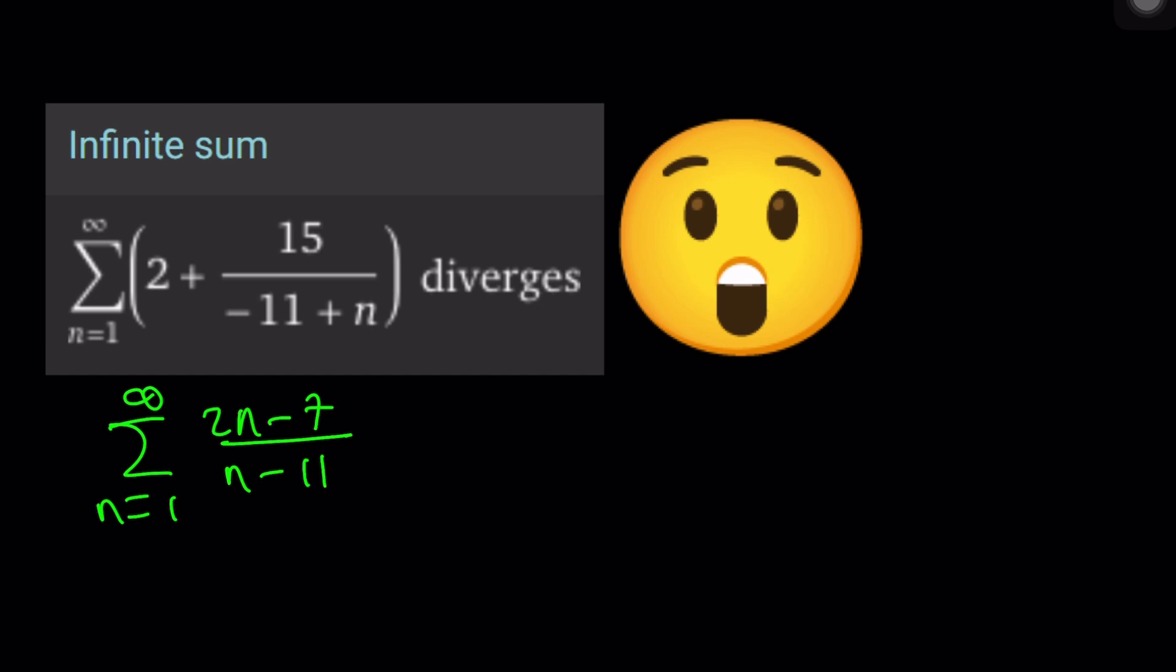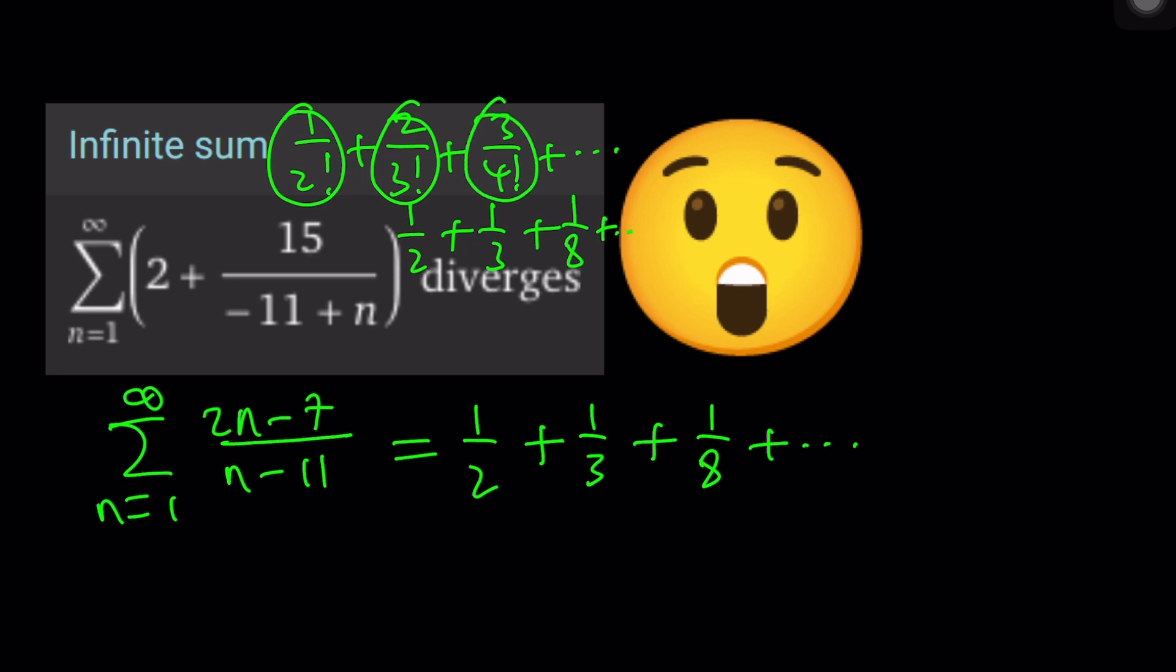Now, this might look very surprising and very different from what we found, but if you think about it, for n equals 1, we get negative 5 over negative 10, which is 1 half. For n equals 2, we get negative 3 over negative 9, which is 1 third. And then for n equals 3, we get negative 1 over negative 8, which is 1 over 8, so on and so forth. Now, if you look at our sum, it was 1 over 2 factorial plus 2 over 3 factorial plus 3 over 4 factorial, and so on and so forth. This is 1 half. If you simplify, this is 2 over 6 or 1 third, and this is 3 over 24 or 1 eighth. You see, it is the same one.